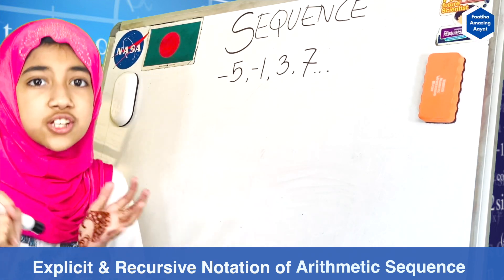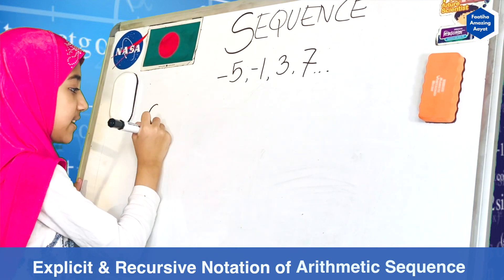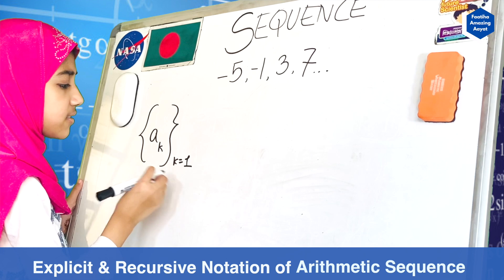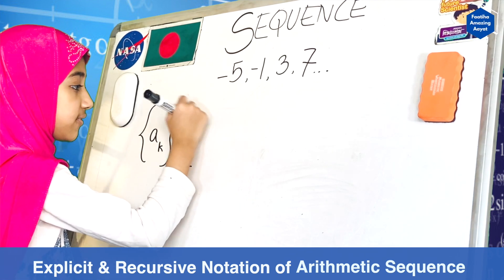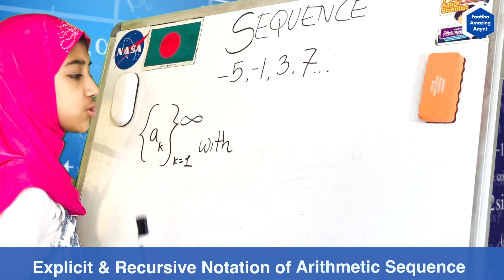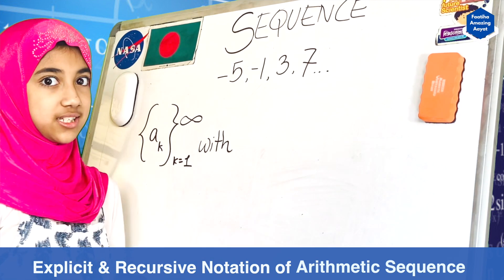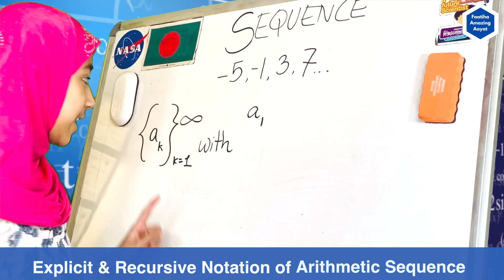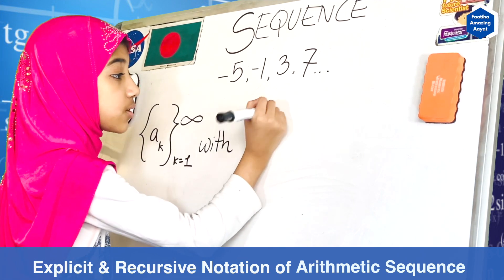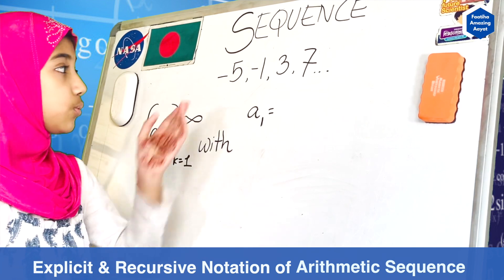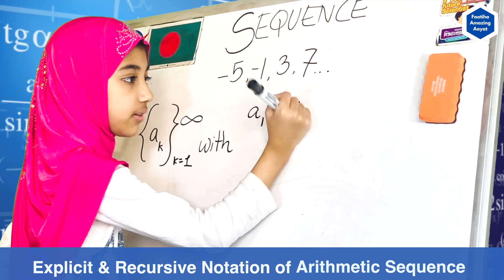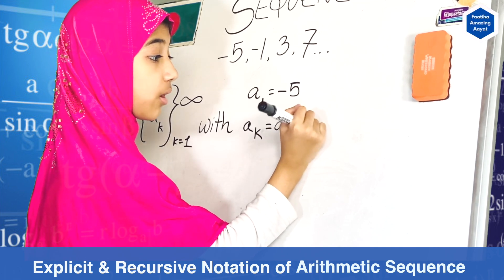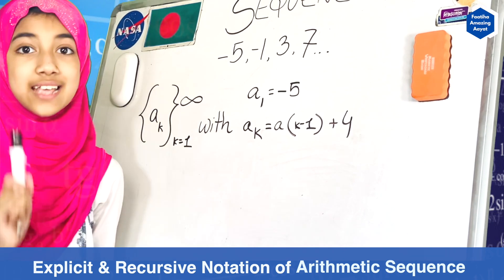So dear viewers, now let's do the recursive formula for the same sequence. We write a sub k from k equals one to infinity. Remember, in explicit we wrote only one formula, but this time we're going to have to write two sentences. So: a sub 1 equals minus five — because k equals one is your first term, which is minus five. Then: a sub k equals a sub (k minus one) plus four, where four is our common difference.